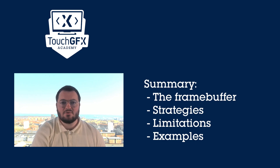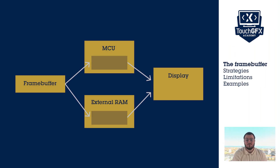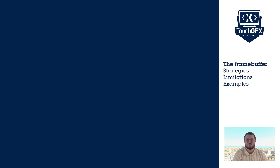The three strategies are: single framebuffer, double framebuffer, and partial framebuffer. We will also see the differences between a display with or without internal RAM, so-called VRAM. A framebuffer strategy defines how much RAM is used for framebuffers and controls how the TouchGFX renders to the RAM. The strategy must match the available RAM and the type of display in the system. To choose the right framebuffer strategy, we first need to understand how TouchGFX works.